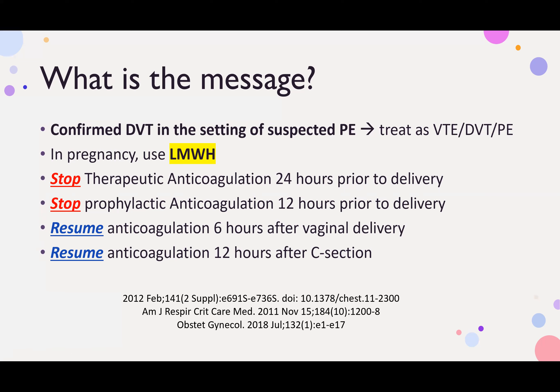If the patient is not diagnosed with DVT and is on prophylactic anticoagulation, that would be low molecular weight heparin once daily. Prophylactic LMWH is given once daily and stopped 12 hours prior to delivery. Therapeutic LMWH is given twice daily subcutaneously — the dose is typically 1 mg/kg twice daily — and stopped 24 hours prior to delivery.